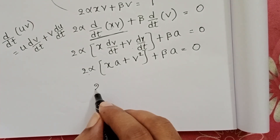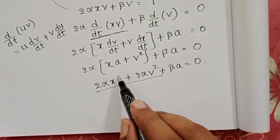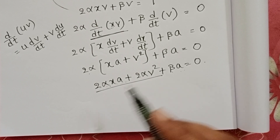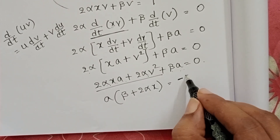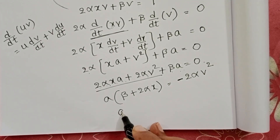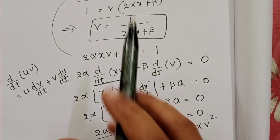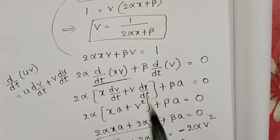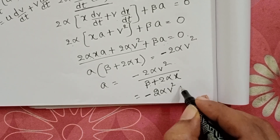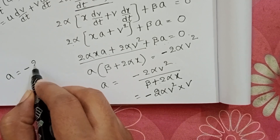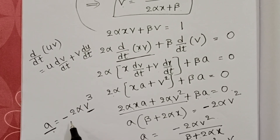Multiply through and group: 2αxa + βa = -2αv². Taking a common: a(β + 2αx) = -2αv². Therefore, a = -2αv² / (β + 2αx). Since velocity v = 1/(2αx + β), substitute 1/(β + 2αx) = v: a = -2αv² · v = -2αv³.